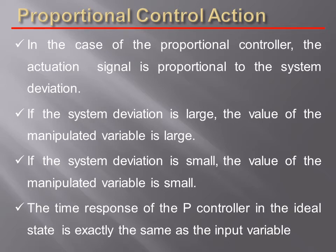In case of the proportional controller, the actuation signal is proportional to the system deviation. If the system deviation is large, the value of the manipulated variable is large. If the system deviation is small, the value of the manipulated variable is small. System deviation means the difference or the error signal given as input to the system, and manipulated variable means the output variable. The time response of the proportional controller in the ideal state is exactly same as the input variable.